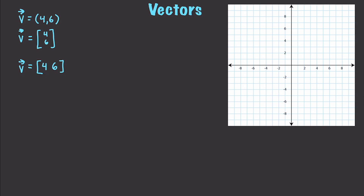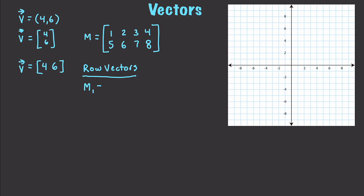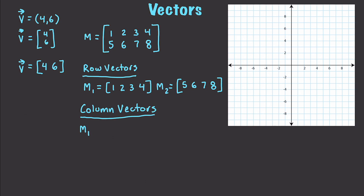You're also going to be able to use matrices to represent a set of row or column vectors. Let's create a matrix with [1, 2, 3, 4; 5, 6, 7, 8]. If we want to represent these as row vectors, we could have one row vector be [1, 2, 3, 4] and the next be [5, 6, 7, 8]. We could also represent these as column vectors: [1, 5], [2, 6], [3, 7], and [4, 8].